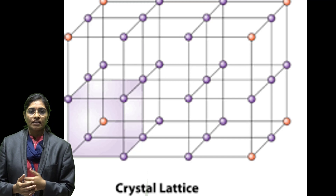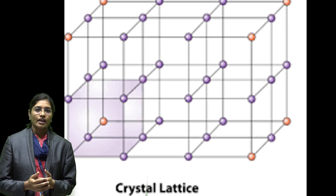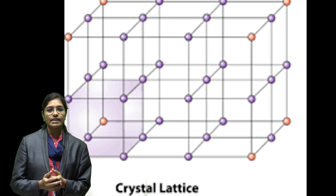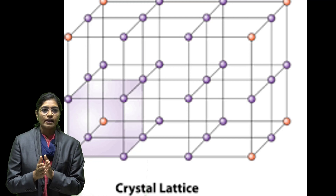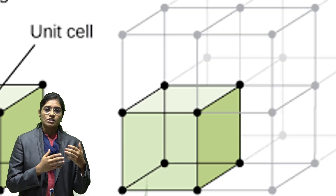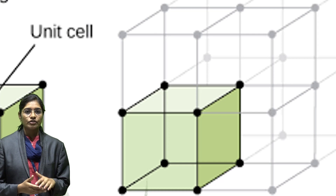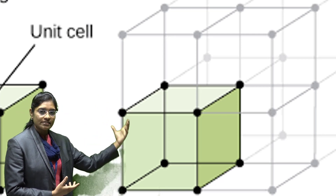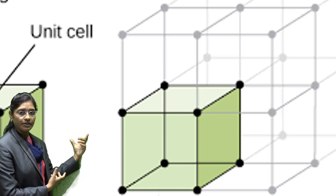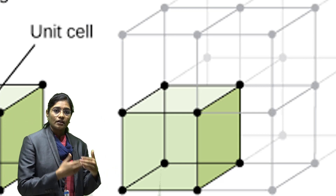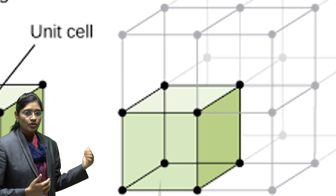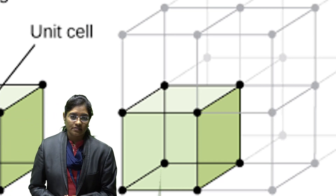This crystal structure includes the unit cell, space lattice and edges. Crystal lattice means the arrangement of ions or particles at points in space — that is a crystal lattice. The unit cell is the smallest repeated unit of a crystal structure.